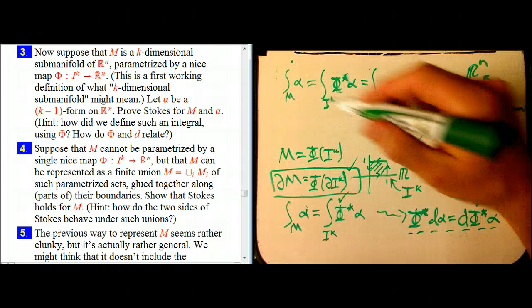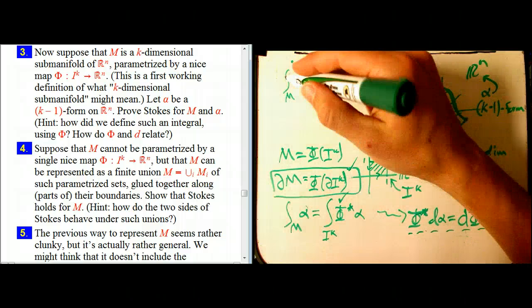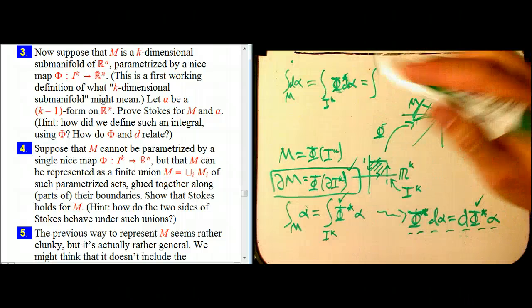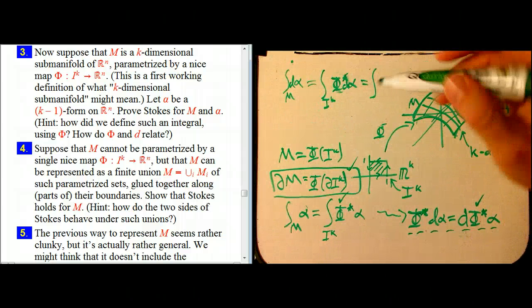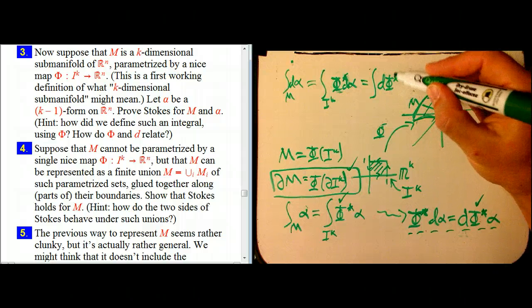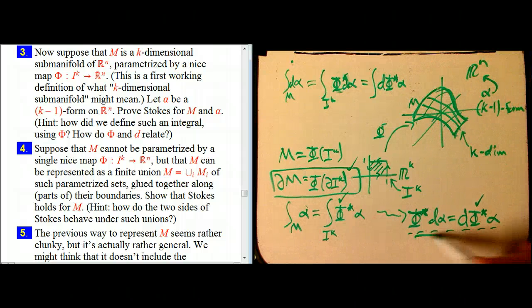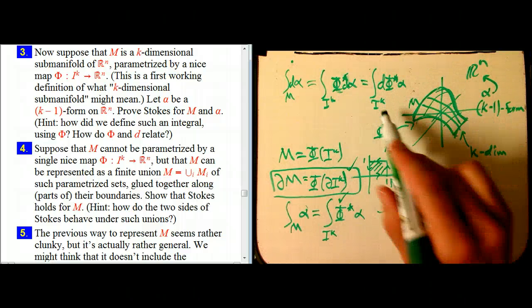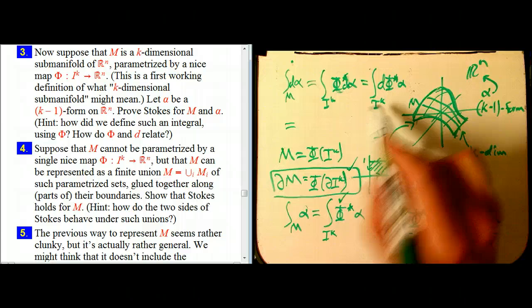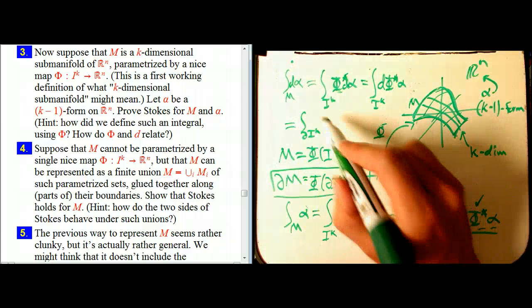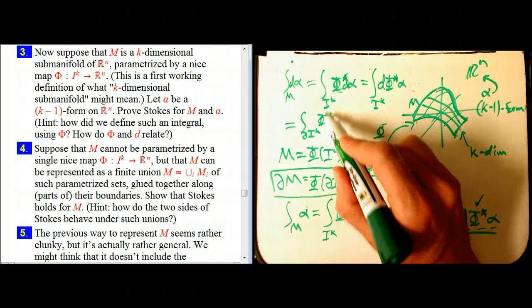That's integral, of d alpha, there we go. There's a d there. That's the integral of, I could use Stokes' theorem, except that's not a d of something. I'm just getting confused about the order of things here. Now I can use the naturality of d. And now I've got the integral over my model case of d of something. That's the integral over the boundary of IK of the pullback of alpha.